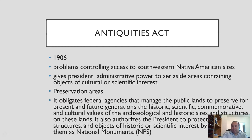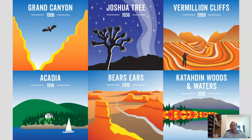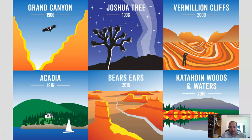A lot of national monuments eventually became national parks. The Grand Canyon started as a national monument under the Antiquities Act, as did Joshua Tree National Park and Acadia National Park. One of the most controversial recent cases was Bears Ears National Monument, signed by President Obama and then reduced by the Trump administration.